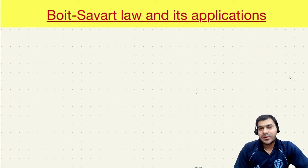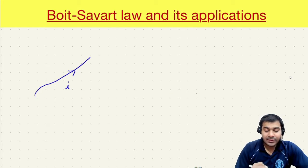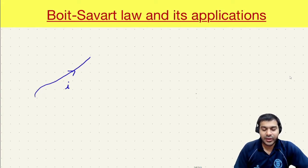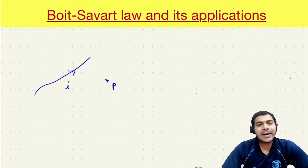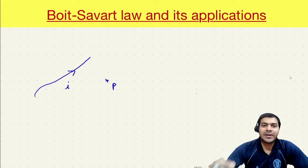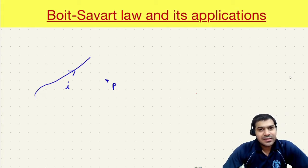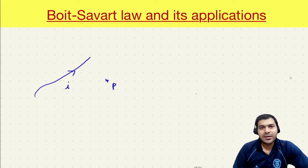In 1820, Oersted made a very interesting observation. He saw that if you have a current carrying wire with a constant current I flowing through it and you bring a magnetic compass near this current carrying wire, the magnetic compass was getting deflected. This interesting observation led Biot and Savart to study the matter further and try to answer the question: what is the amount of magnetic field being created at point B or any other point nearby this current carrying wire?